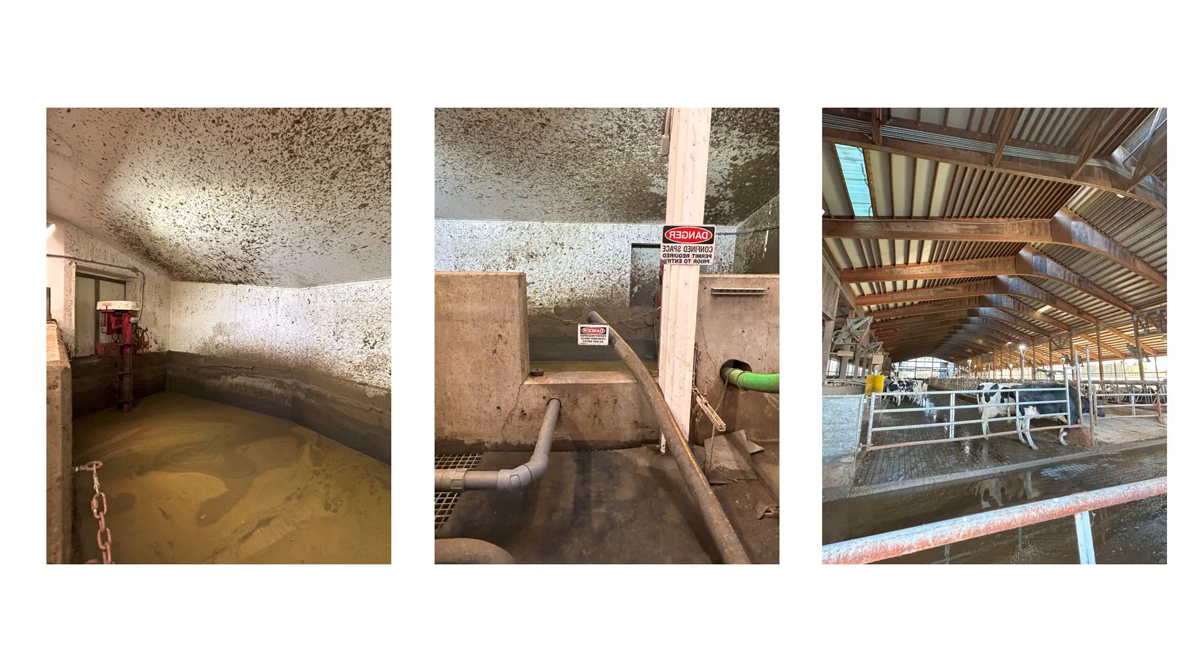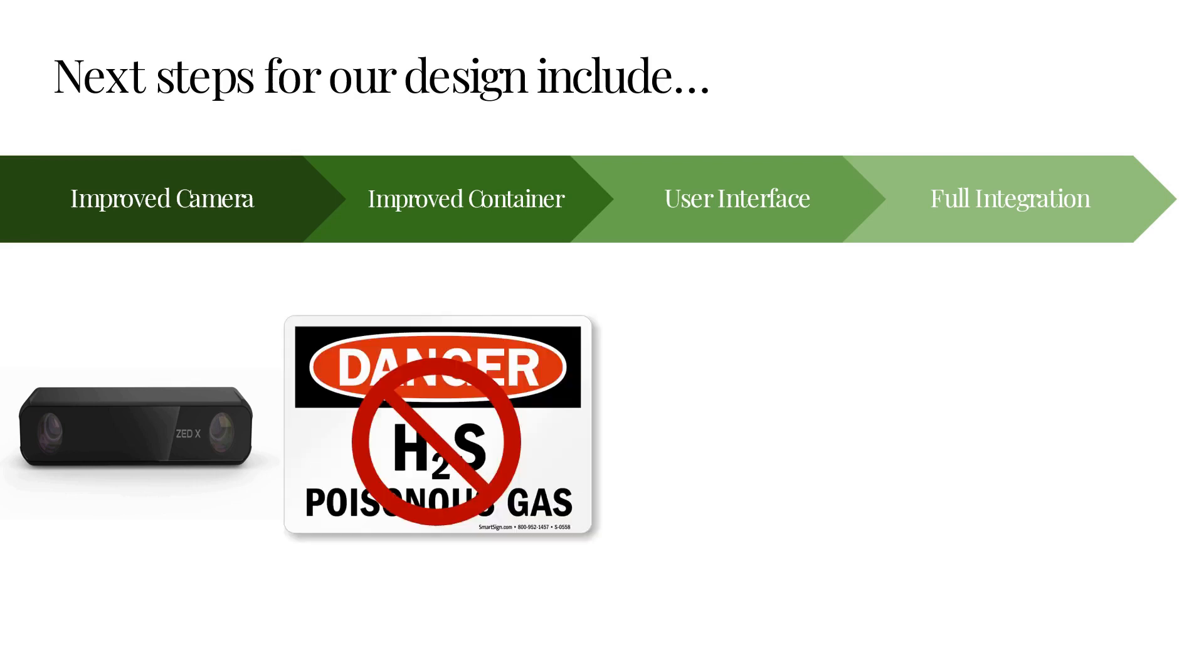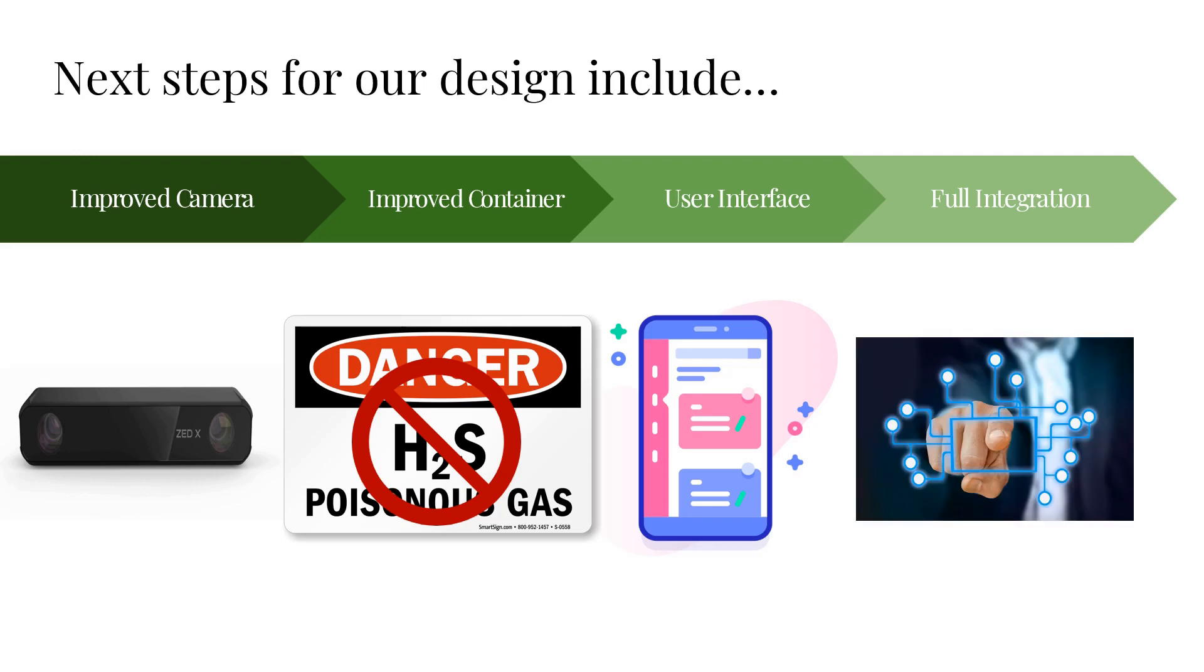Based on our results, the device could be used for smaller indoor manure storages. Next steps for our design include improving the camera to measure greater distances, replacing the device housing with sustainable and corrosion-resistant materials, and creating a user interface in the form of an app or remote control display that would allow users to control and access volume values from their device in real time.